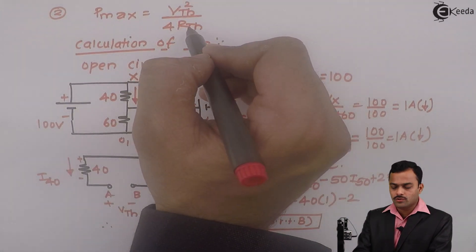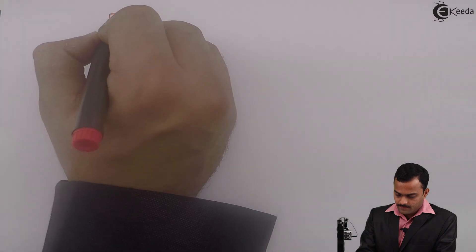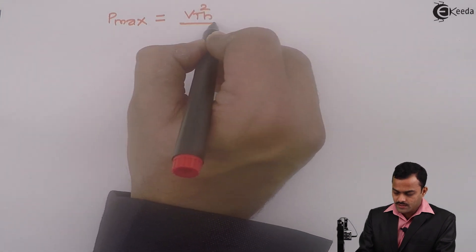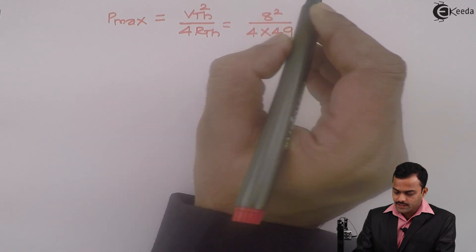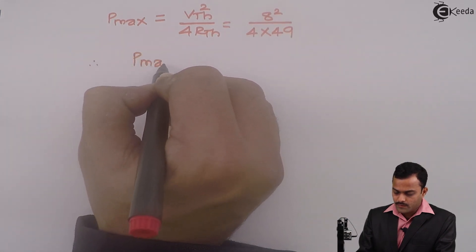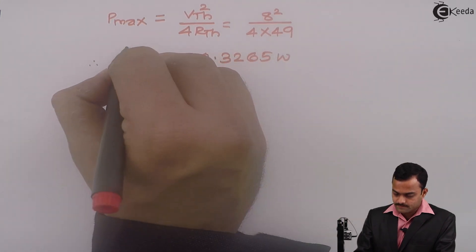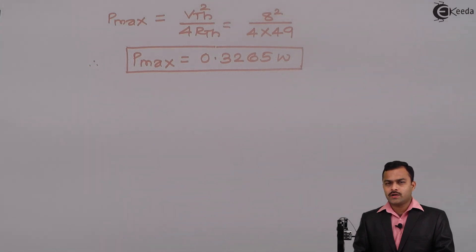Now that we have VTH and RTH, we can use the formula to get the answer. Pmax equals VTH squared divided by 4 RTH, which is 8 squared divided by 4 multiplied by 49. The maximum power transferred to the load is 0.3265 watt. Problem is over. Here we have seen how to use Thevenin's theorem in order to get maximum power transfer to a load. In subsequent videos we will solve more numericals based on this. Thank you.